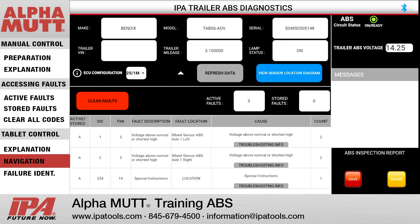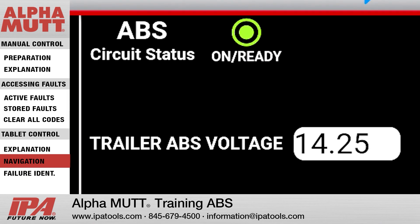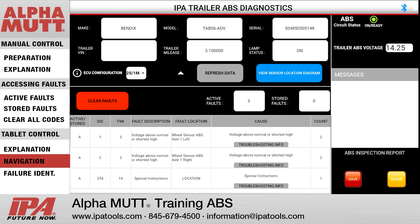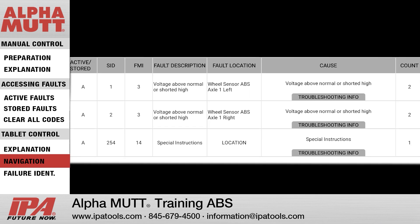Press Request ABS ECU Information to populate the make, model, serial, trailer VIN, trailer mileage, and ABS lamp status fields. The ABS circuit status light will illuminate green, and the battery voltage field will also populate. Press Request Faults to populate the lower portion of the screen with any active or stored faults.